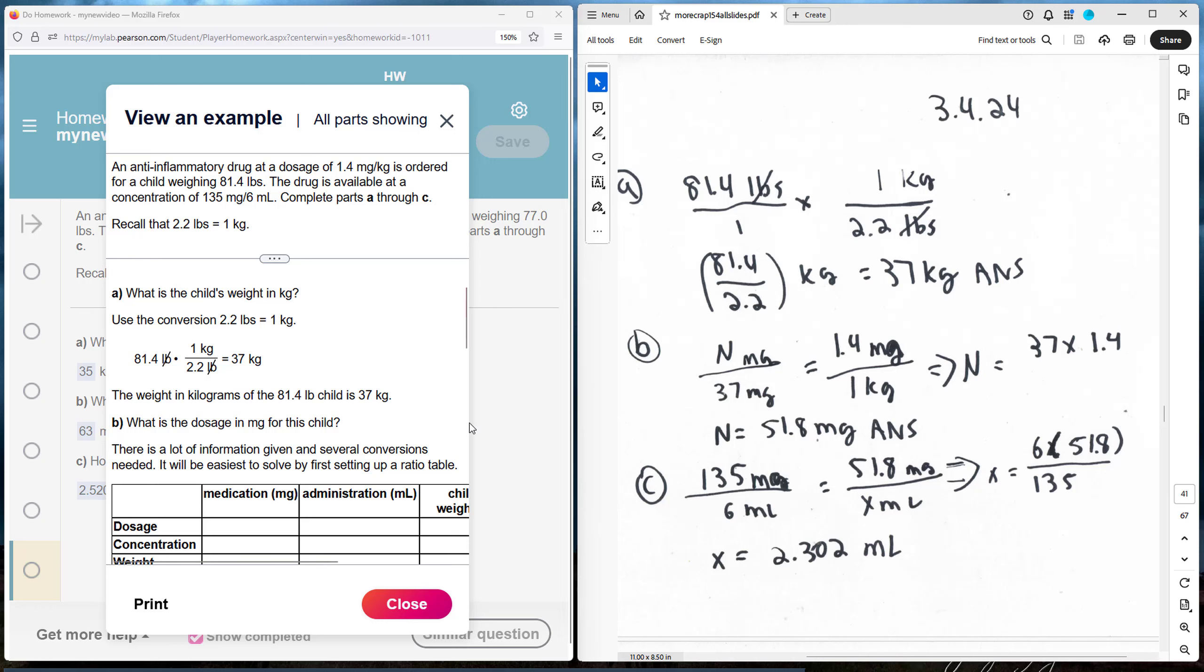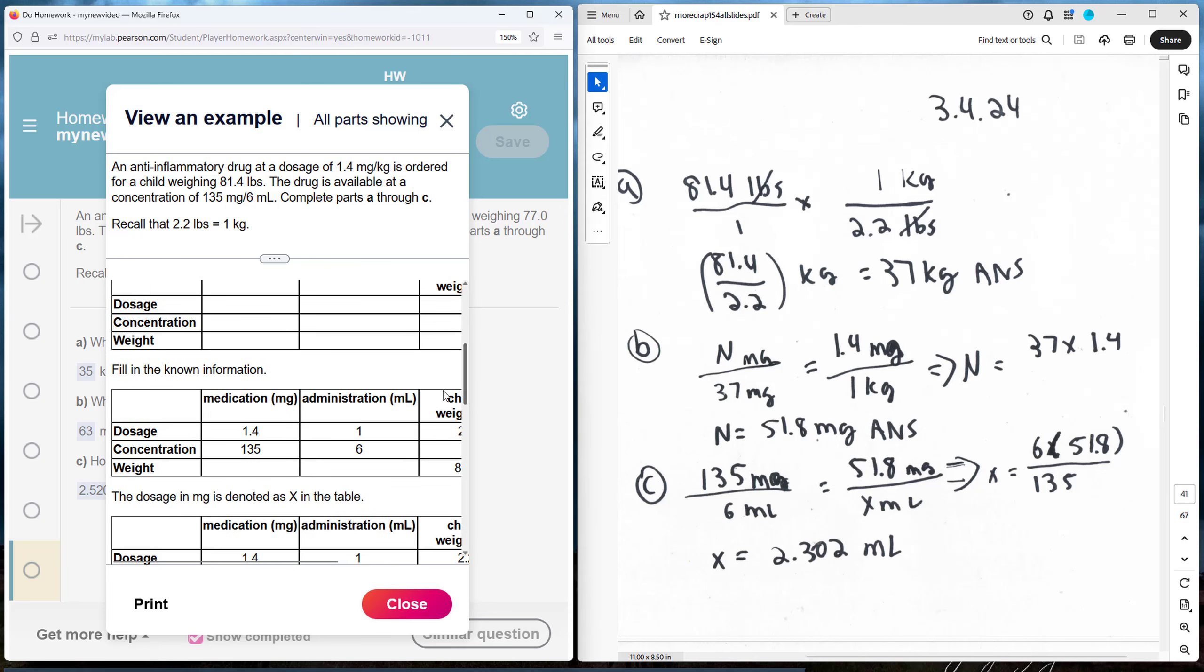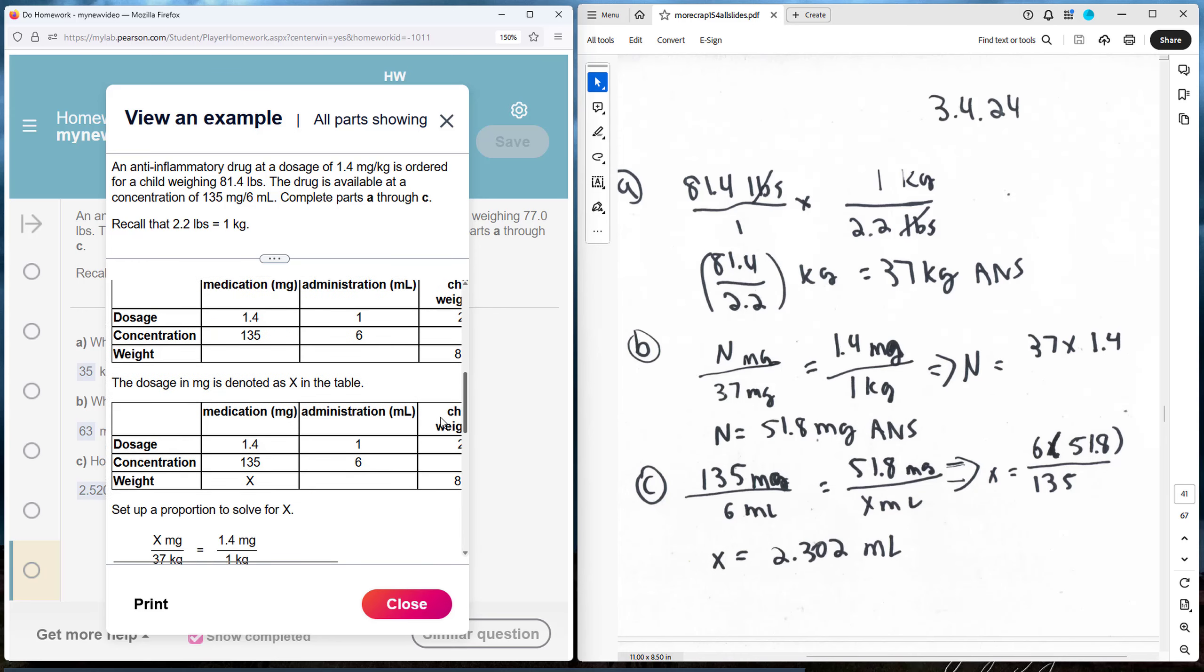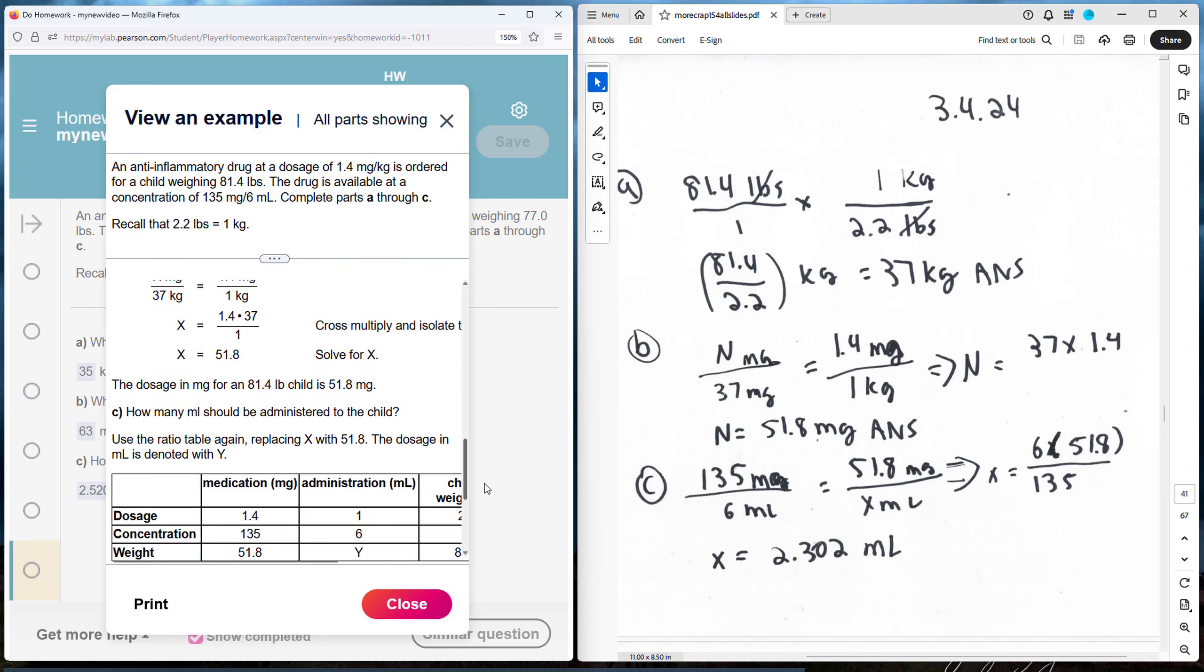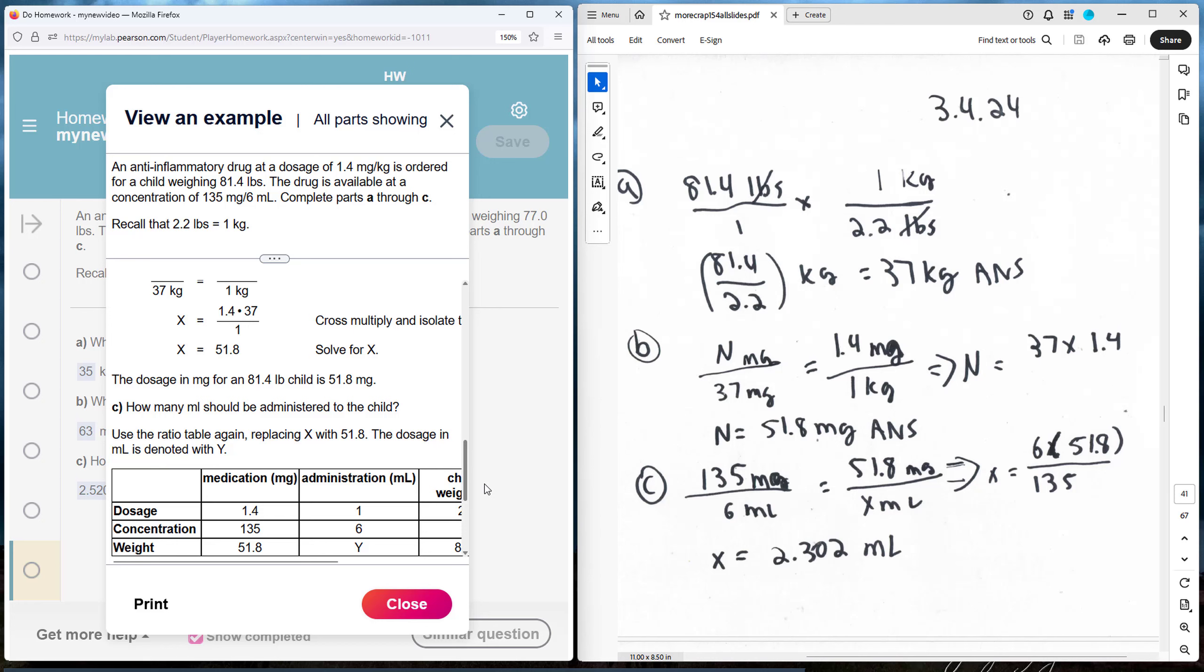Part C: How many milliliters should be administered to the child? So we know that the child is going to need 51.8 mg of medication. We know that in liquid form, 135 mg per 6 mL. I set up a proportion here.